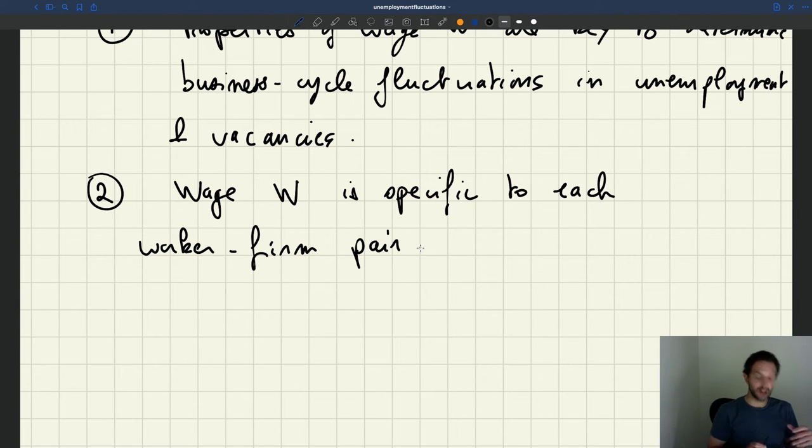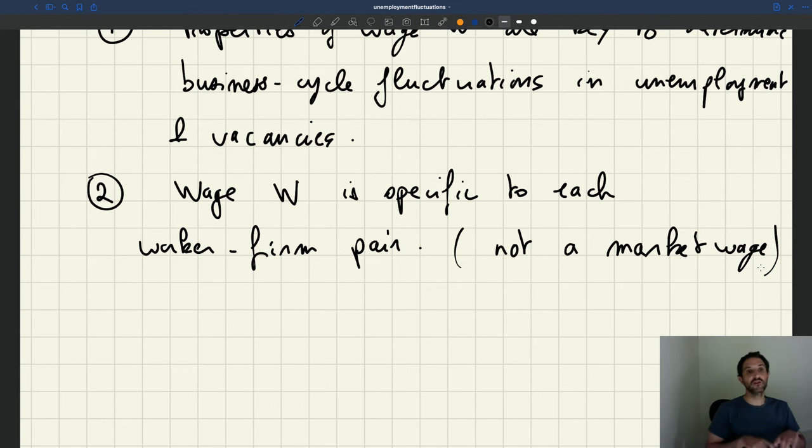And so in fact because now the wage - because we don't have a market wage, because the wage is not some kind of market variable or aggregate variable but instead is just specific to each worker-firm pair, a very simple way to model our wage is going to be to introduce a pricing function that just tells us what is the wage that comes out of any worker-firm match. And of course workers will know that pricing function. Firms will know that pricing function and people will take that into account when they make their decision about participating in the labor market, about hiring workers.